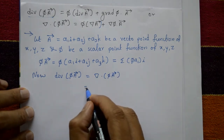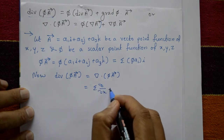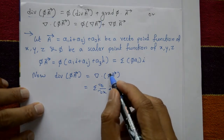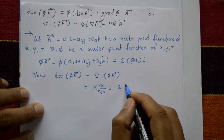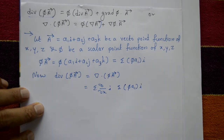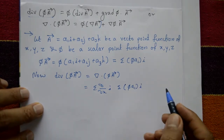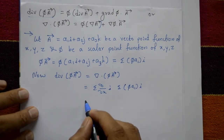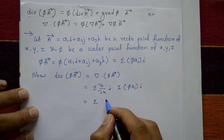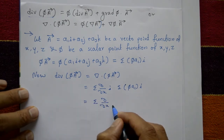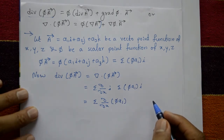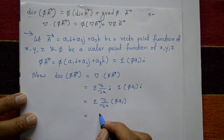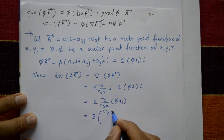We know that del means summation of ∂/∂x · i. So divergence of φ**A** equals del dot (φ**A**), which is a summation of φ·A₁·i components. Applying the del operator: summation of ∂/∂x of (φ·A₁), where i·i = j·j = k·k = 1.